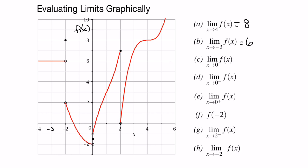Another way to do this: because this function is continuous for values less than negative 2, we can just substitute f at negative 3 into the function, and that will give us our limit — so it would be 6. The same applies for the function defined for values greater than 2: plug in f at 4 and you'll get 8.